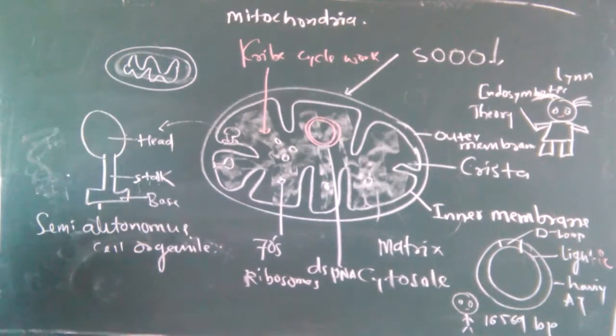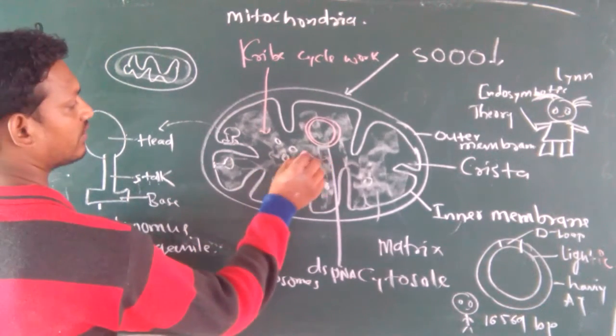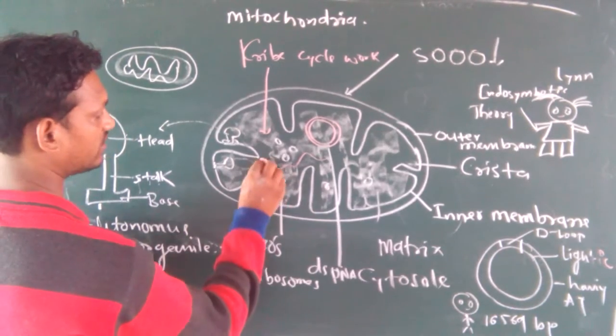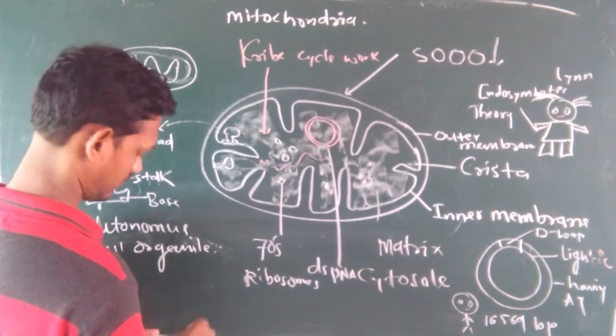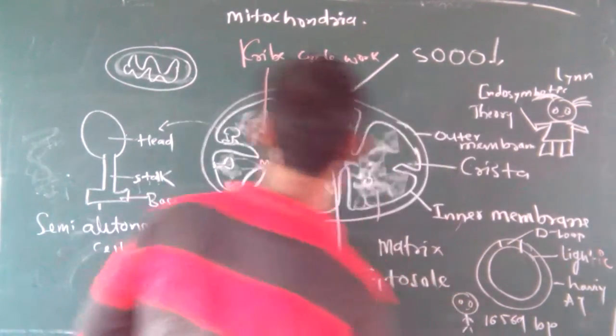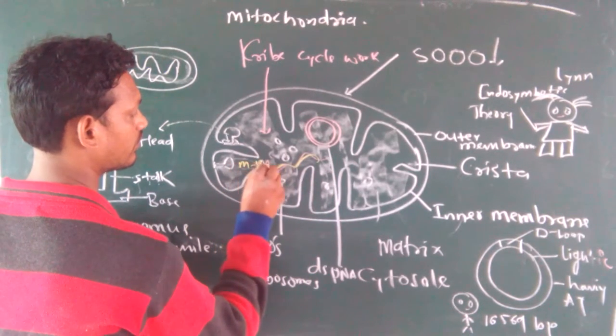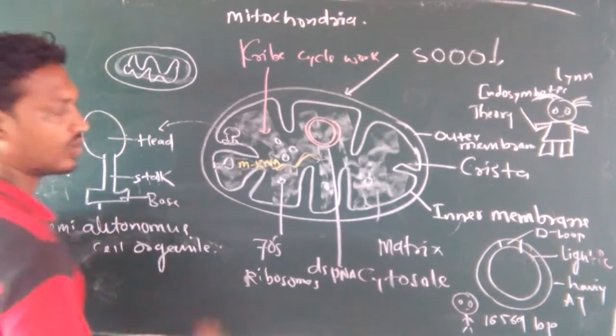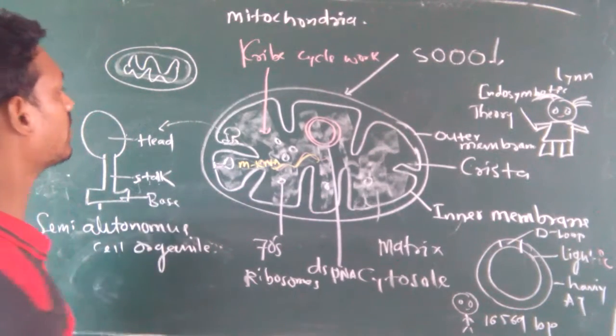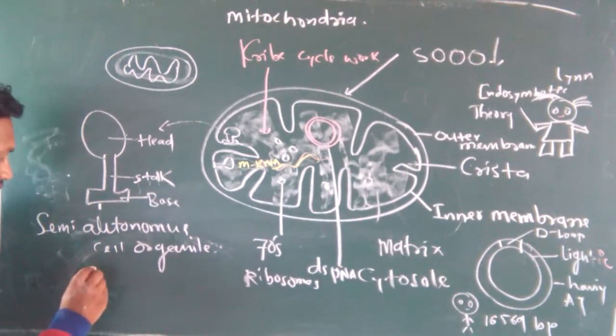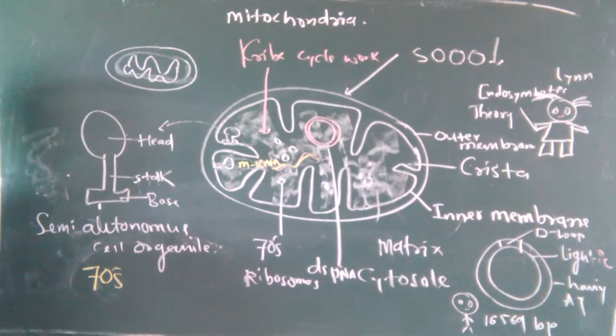It contains its DNA and messenger RNA. It also contains messenger RNA. All the things present inside. What about the ribosome? Here, this 70S ribosome is present.